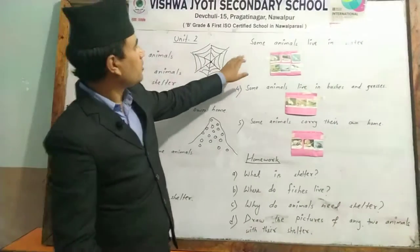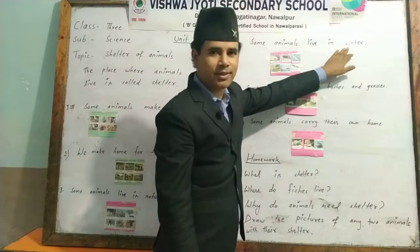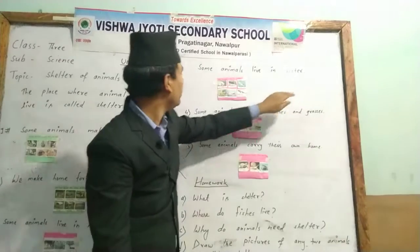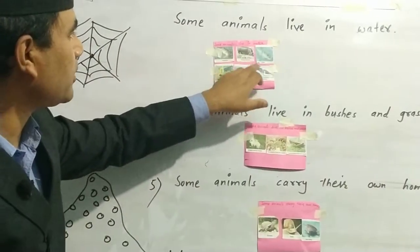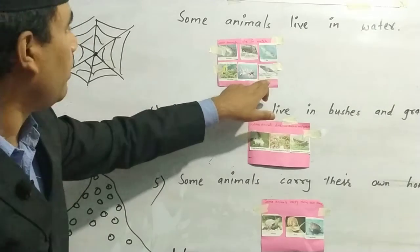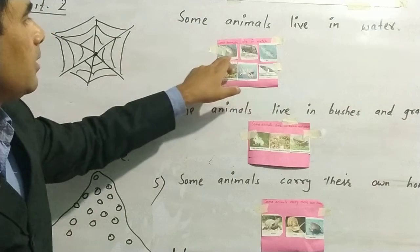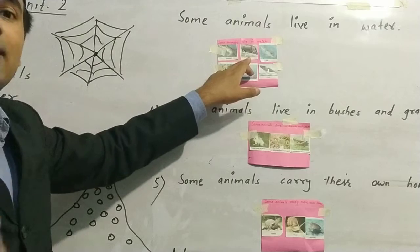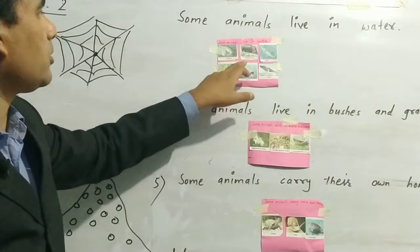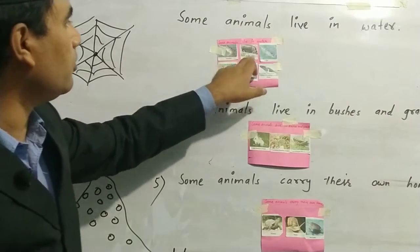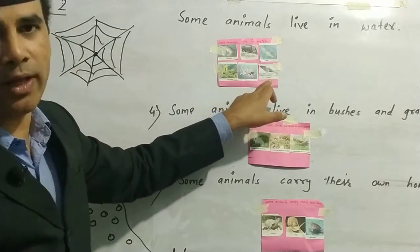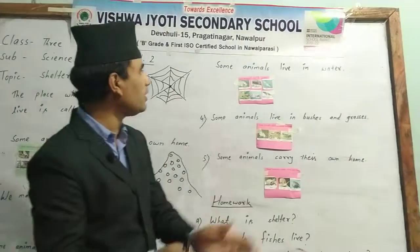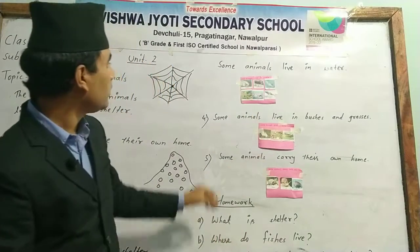Some animals live in water. Examples include crocodile, hippopotamus, fish, seahorse, octopus, and whale. Crocodile and hippopotamus are amphibians — they can live both in water and on land. Fish, seahorse, octopus, and whale live inside the water. Water is the shelter of aquatic animals.